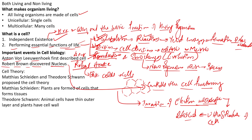Now we can start our discussion on an important concept: the famous theory called the cell theory. It is also called a doctrine — something that is standard and well accepted. We cannot reject it; it is a standard theory that we have in cell biology.